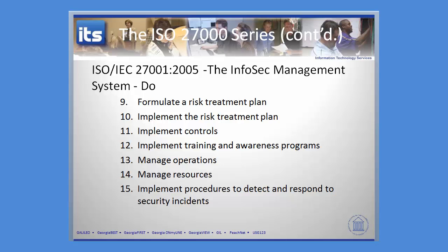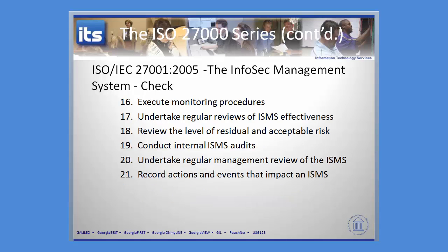We previously discussed the plan phase and the do phase. Now we're moving into the check phase. During the check phase, we're going to execute our monitoring procedures — monitoring those operations put into place during the do phase. We're going to do regular reviews of effectiveness, review the level of residual and acceptable risk to the entire program, do some audits against ourselves, and then do a regular managerial review of that information security management system, recording actions and events that could impact it.